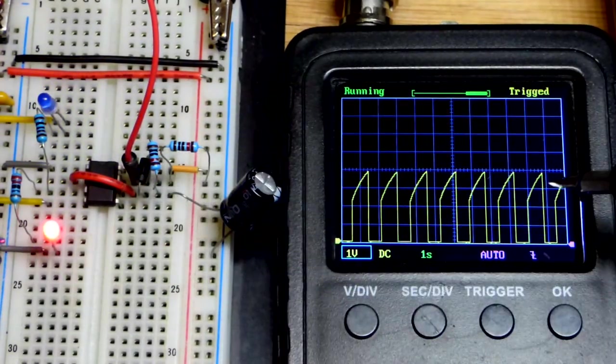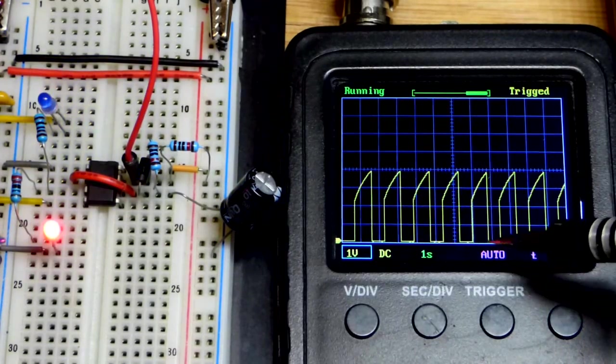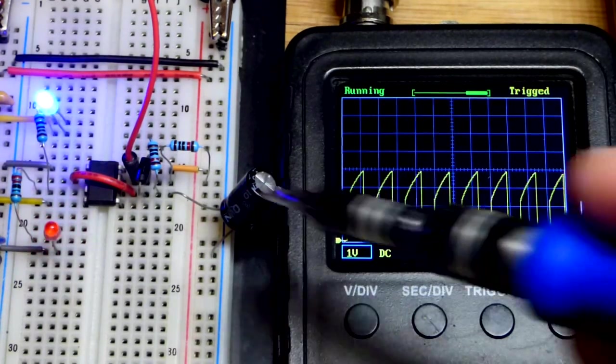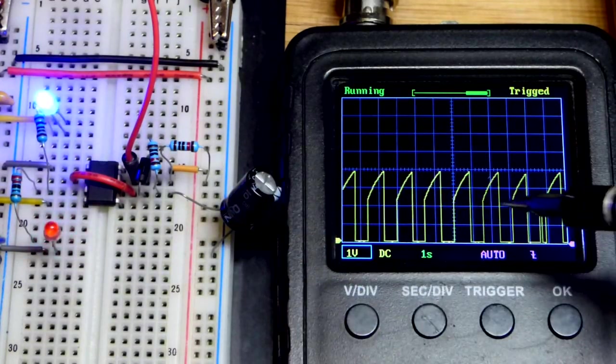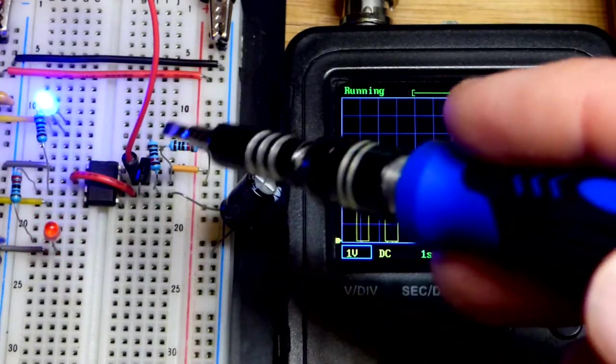The discharge pin, when the capacitor is discharging, connects directly to ground. Then it stops connecting to ground to charge the capacitor, so you get a sudden jump in voltage because we have a resistor and a diode there to charge the capacitor.